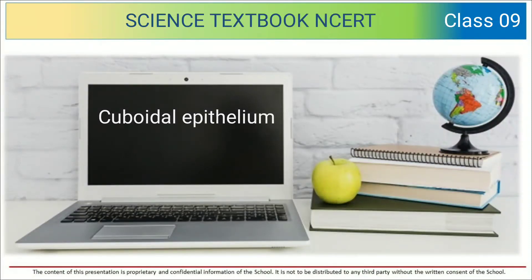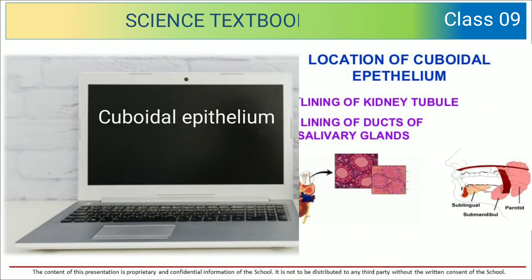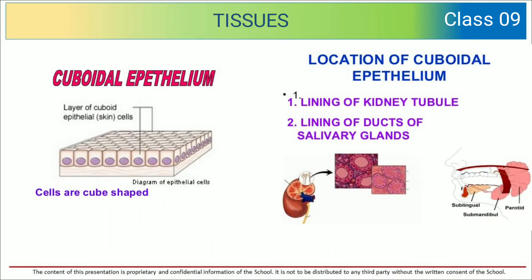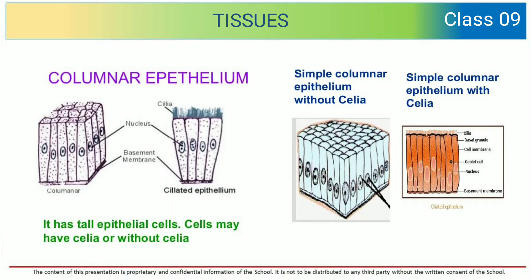Welcome back to your science class. We are going to discuss cuboidal epithelium. The cells are cube-shaped in a layer of cuboidal epithelium. The location of cuboidal epithelium is in the lining of kidney tubules and the lining of ducts of salivary glands.